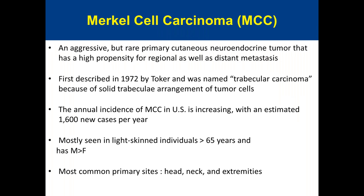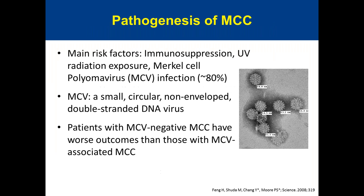Merkel cell carcinoma is an aggressive but rare primary cutaneous neuroendocrine tumor with a high risk for regional or distant metastasis. It was first described in 1972 by Toker and initially named trabecular carcinoma due to the solid trabecular arrangement of tumor cells. In the U.S., the annual incidence is gradually increasing with an estimated rate of 1,600 new cases per year, predominantly in individuals older than 65 years, light-skinned individuals, mainly in sun-exposed areas such as the head and neck and extremities.